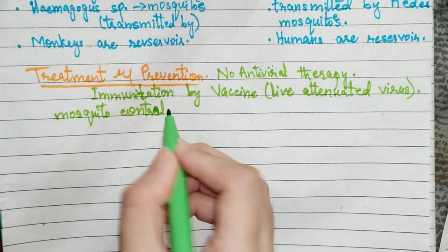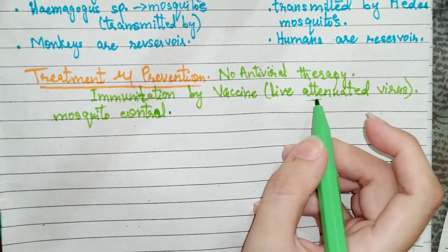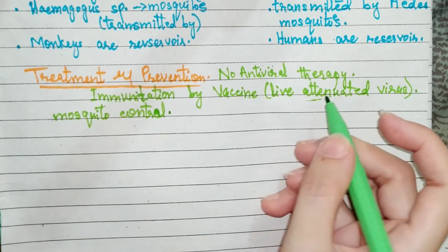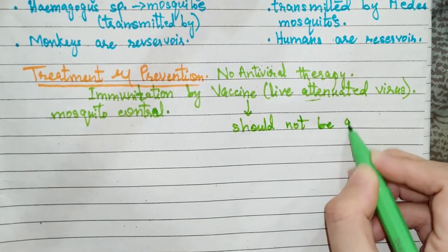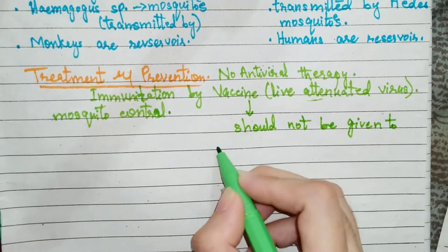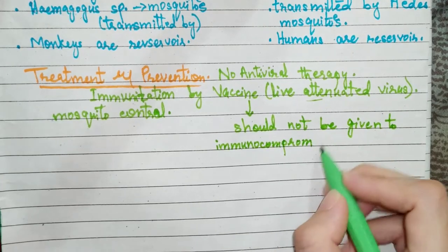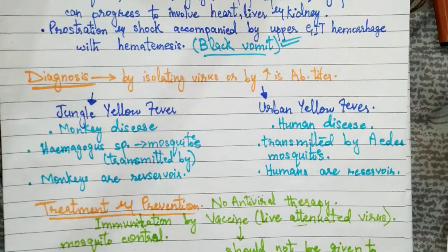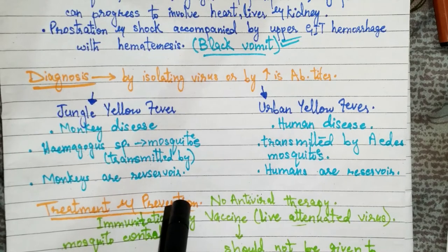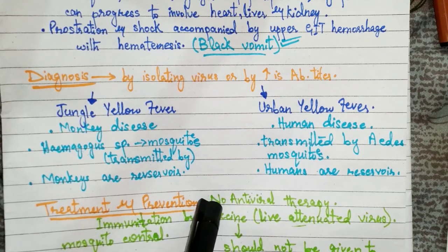One more important point: because the vaccine contains a live attenuated virus, it should not be given to immunocompromised patients or pregnant women. So this was all about the yellow fever virus. The key clinical finding is black vomit. Hope you like this video — share it with your friends and subscribe to the channel. Thank you so much, take care, Allah Hafiz.